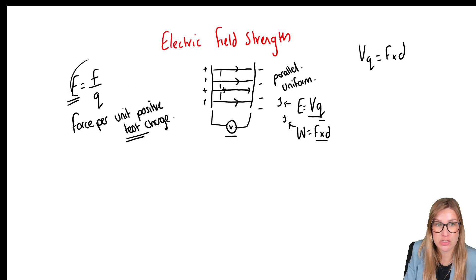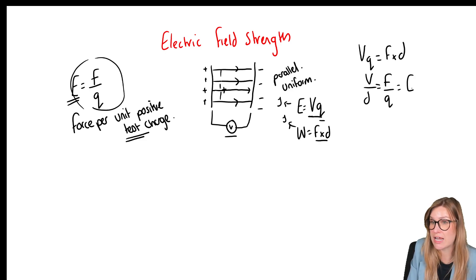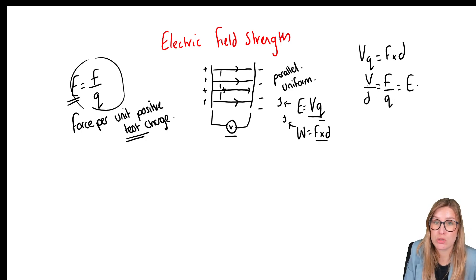Looking at electric field strength as force per unit charge, if I equate VQ = force × distance, I can rearrange to show that V over D equals force per unit charge — that is, the electric field strength. So electric field strength equals the potential difference between the plates divided by the distance between them.